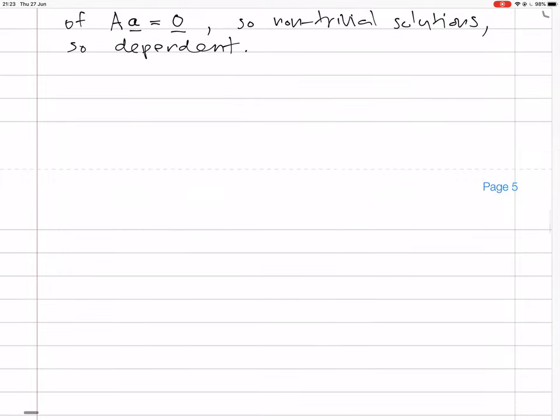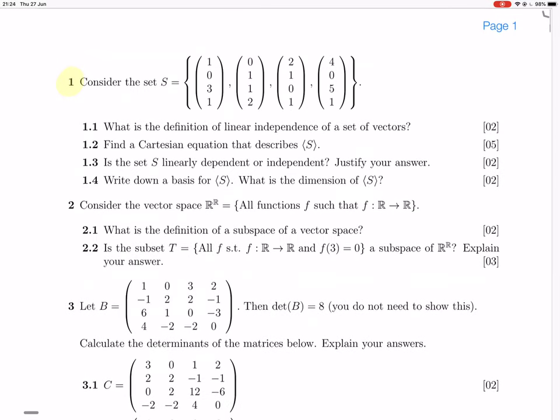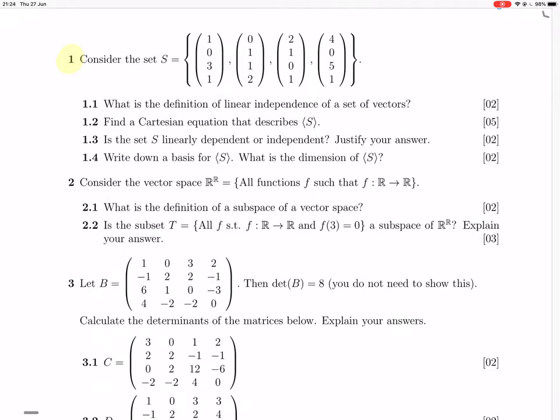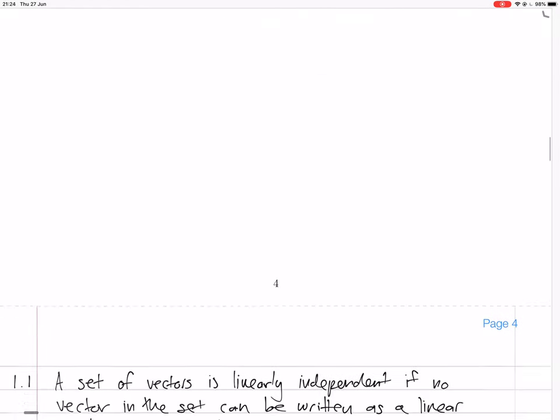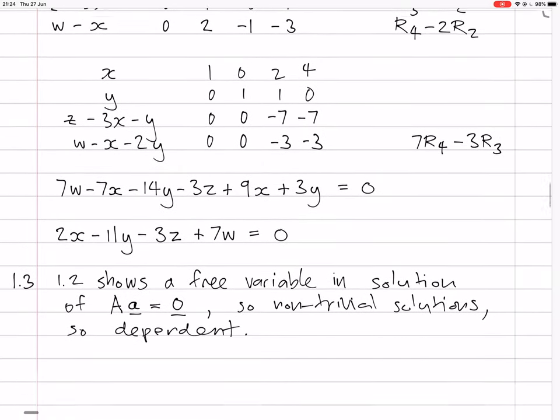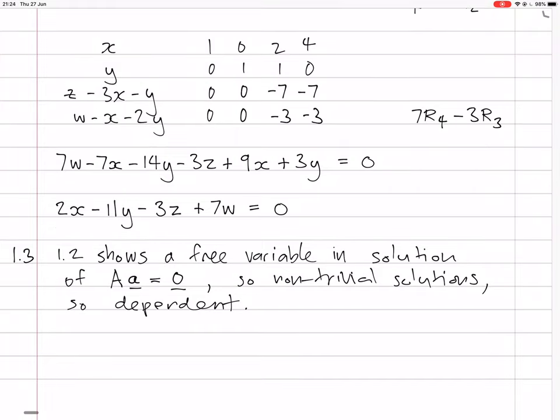Next question, 1.4. I think it was put down a basis and give the dimension. So we want to throw out all the vectors that are dependent on other vectors. So if we look at the Gauss reduction, basically we want to throw out the vectors that don't have a pivot in that column, because they can be written in terms of other vectors.